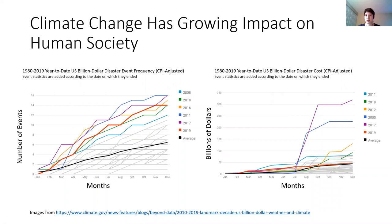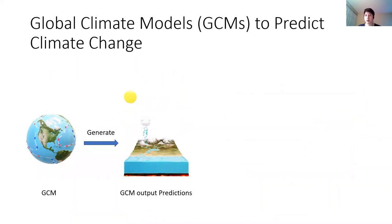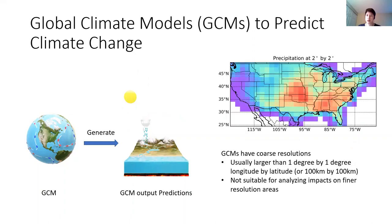Climate change has a great impact on human society in recent years. It's reported that both the frequency and the loss of large climate-related disasters in the United States have increased in the last decade. In order to understand climate change and get better preparation for climate events and reduce the loss, scientists have built global climate models, or GCMs, to predict future climate change, but their grid resolution is too coarse to be used in local climate impact analysis.